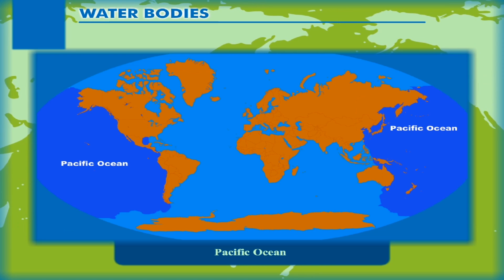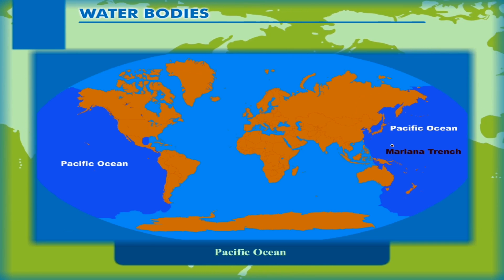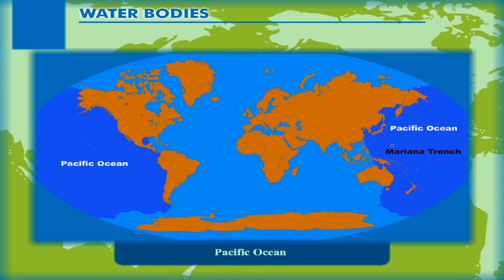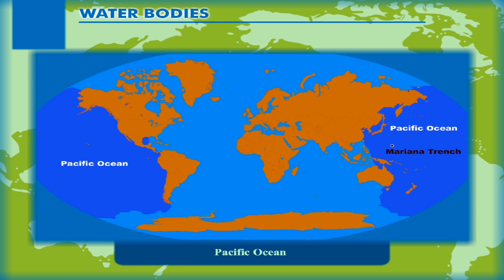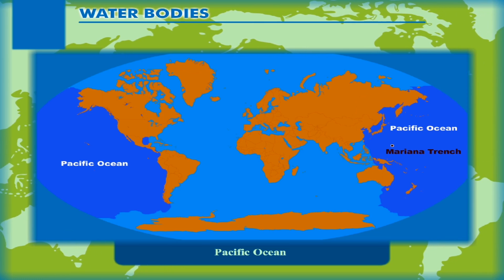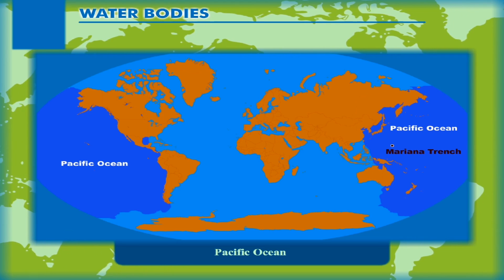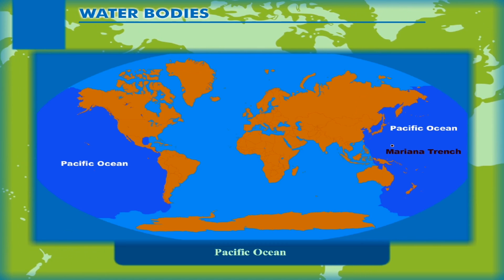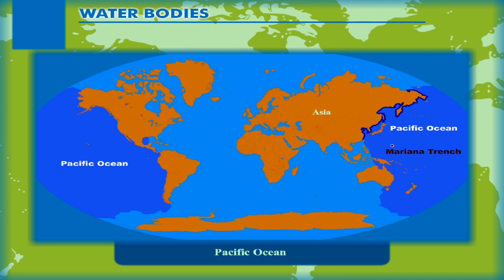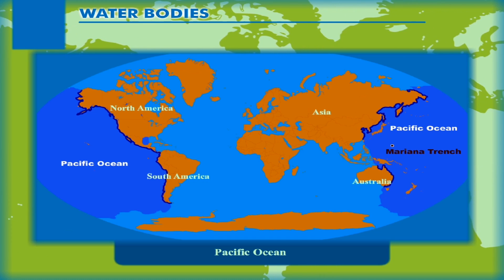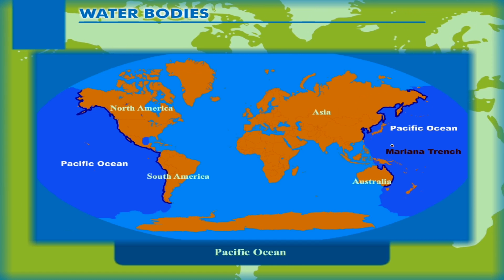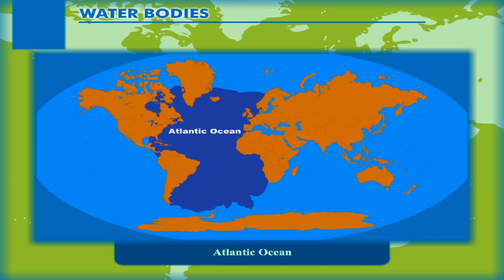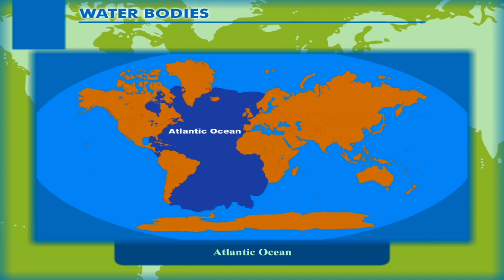Pacific Ocean: It is larger in area than all the oceans put together. The Mariana Trench, the deepest part of the earth, lies under the Pacific Ocean. The Pacific Ocean is circular in shape. The deepest point of the Mariana Trench is 10,911 meters below sea level. The continents of Asia, Australia, North and South America surround the Pacific Ocean.